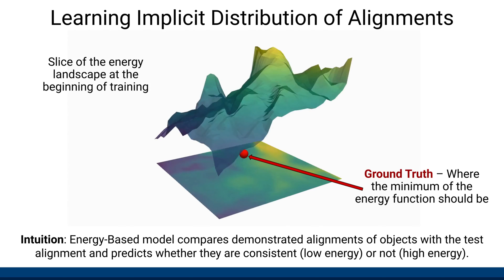Having a suitable alignment representation and a large and diverse dataset to learn from, we use an energy-based model to implicitly learn a conditional distribution of alignments between objects. The energy-based model compares the considered test alignment with the demonstrated ones and predicts whether they are consistent, meaning the energy should be low, or not, meaning energy should be high.